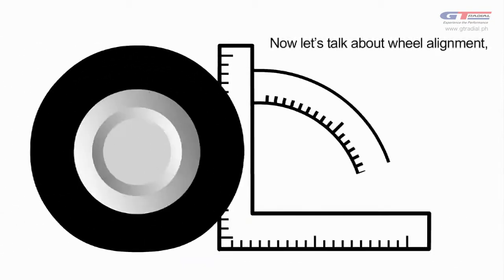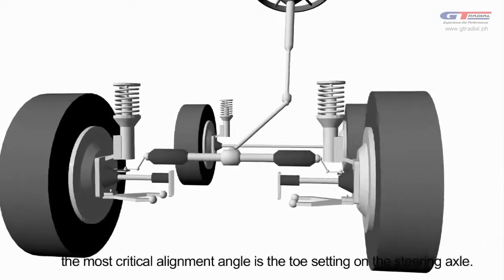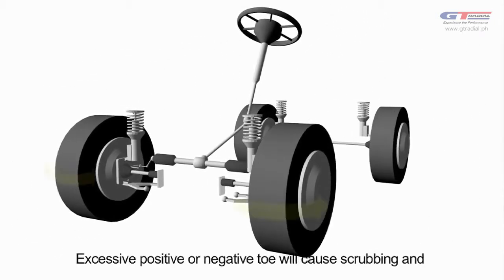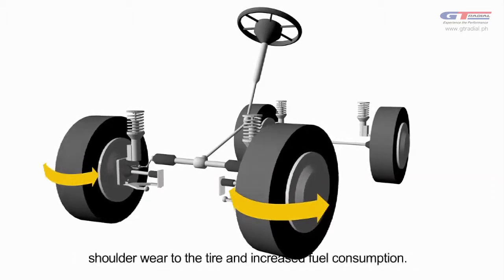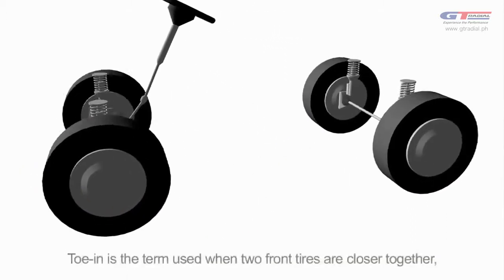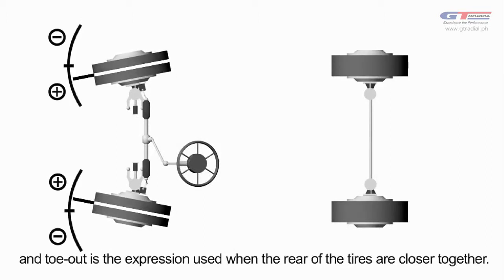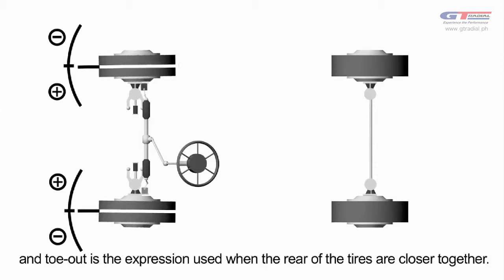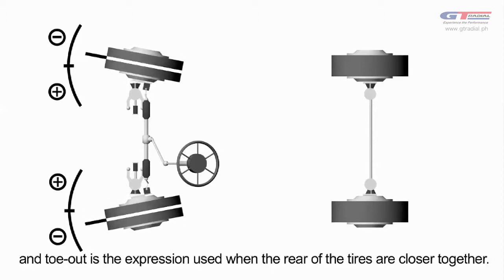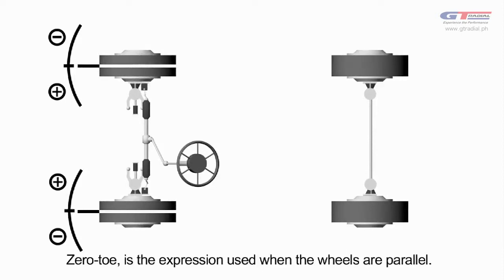Now, let's talk about wheel alignment. The most critical alignment angle is the toe setting on the steering axle. Excessive positive or negative toe will cause scrubbing and shoulder wear to the tire and increased fuel consumption. Toe can be expressed as an angular measurement. Toe in is the term used when the leading edge of the two front tires is closer together. And toe out is the expression used when the trailing edge of the two front tires are closer together. Zero toe is the expression used when the wheels are parallel.